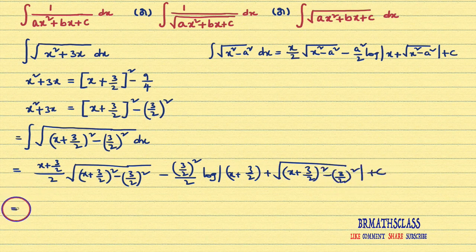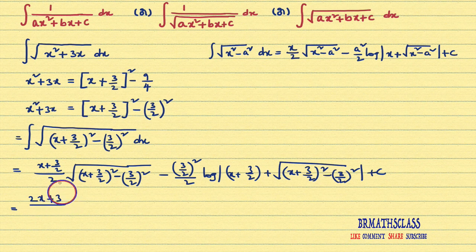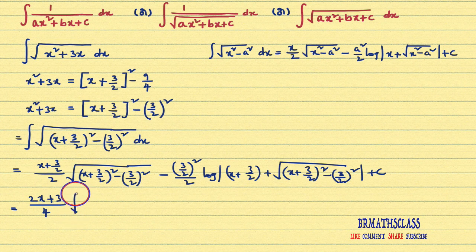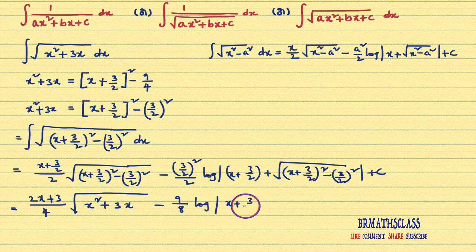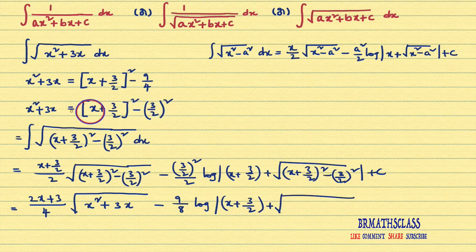If we simplify this, one more step we can write. The LCM is 2, and you will get (2x + 3)/4 into √(x² + 3x) — because (x + 3/2)² − (3/2)² equals x² + 3x — minus 9/4 divided by 2 is 9/8, into log|x + 3/2 + √(x² + 3x)| + C. That's it.